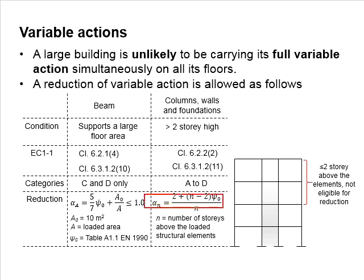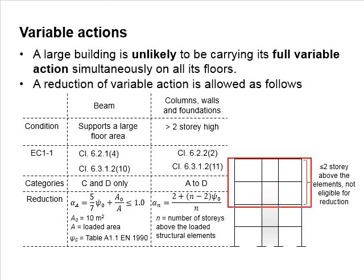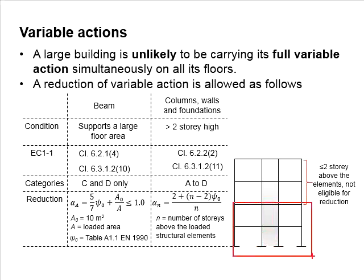Based on the equation, N refers to the number of storeys above the loaded element. The top two storeys cannot be considered for reduction of variable actions. The reduction can only be applied when N is greater than 2.